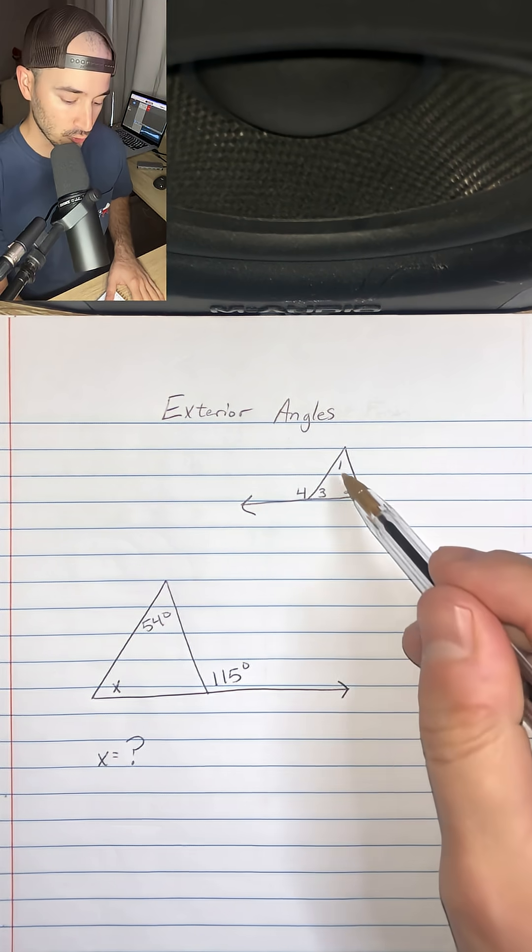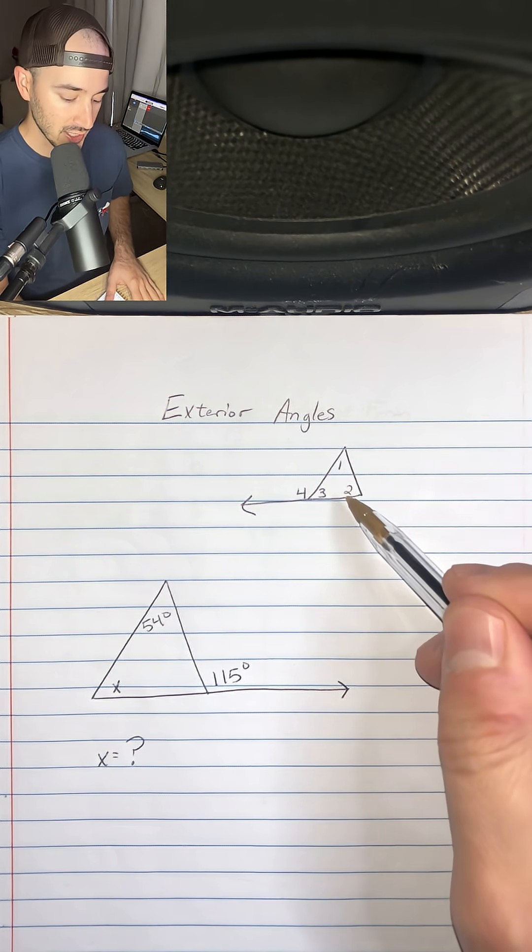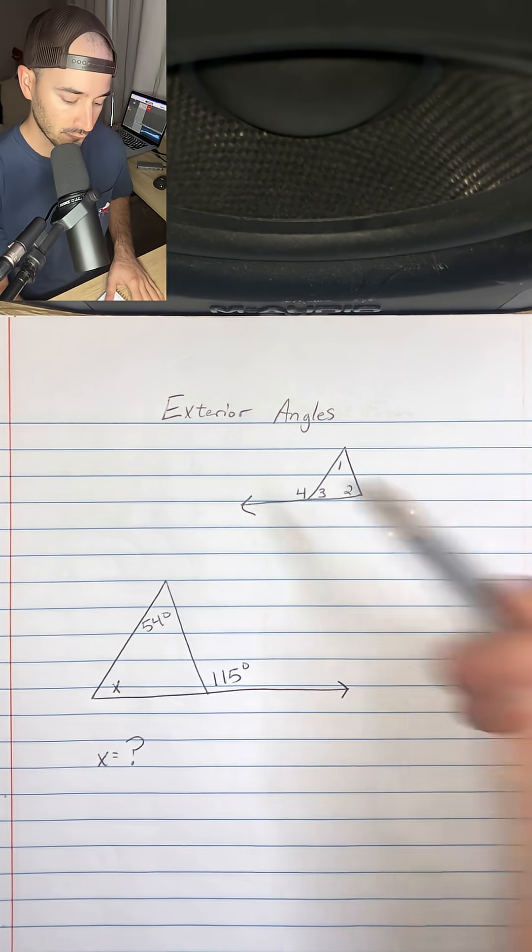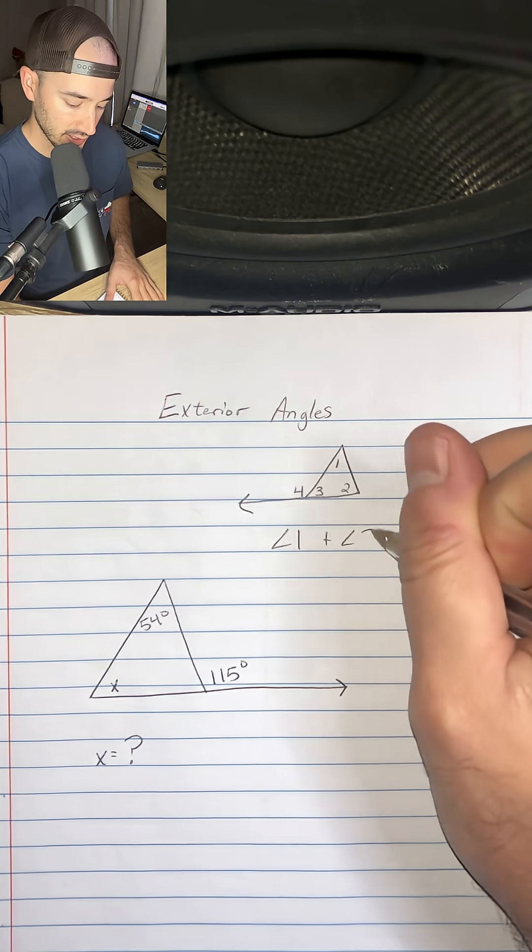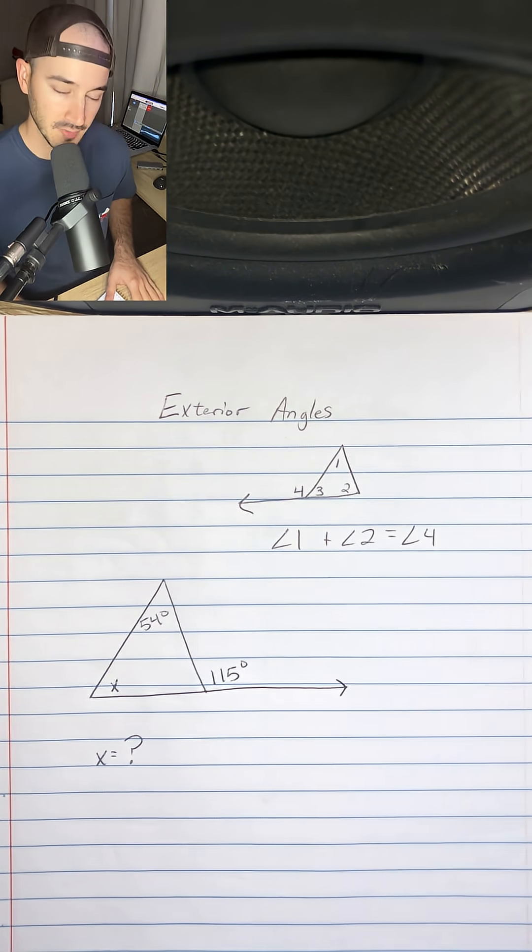we know that angle 1 and angle 2 add up to equal angle 4. So angle 1 plus angle 2 is equal to angle 4.